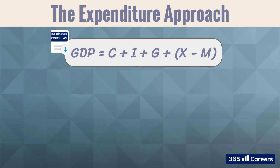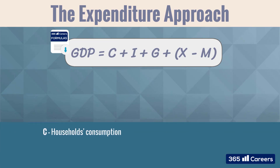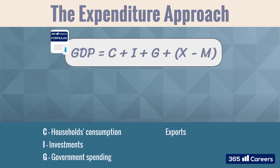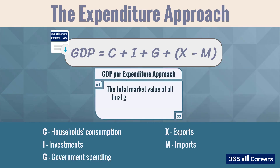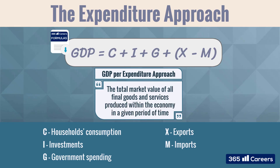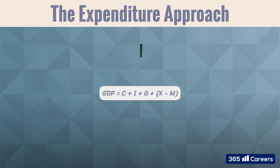As per the expenditure approach, the GDP is equal to the total consumption spending on final goods and services, plus investments in capital equipment and inventories, plus government spending, plus exports, minus imports. This is how we get the total market value of all final goods and services produced within the economy in a given period of time, which is basically the definition of GDP as per the expenditure approach.